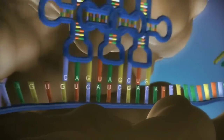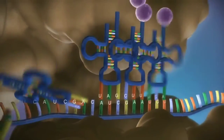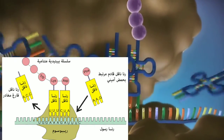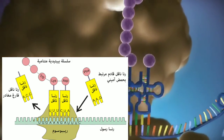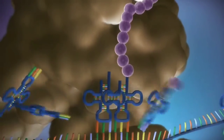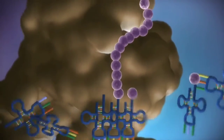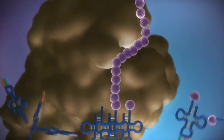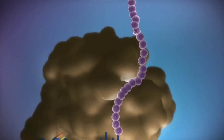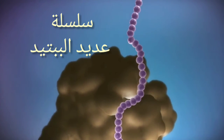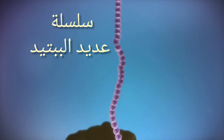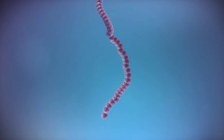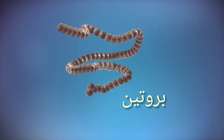As each triplet is read, a transfer RNA delivers the corresponding amino acid. This is added to a growing chain of amino acids. Once the last amino acid has been added, the chain folds into a complex 3D shape to form the protein.